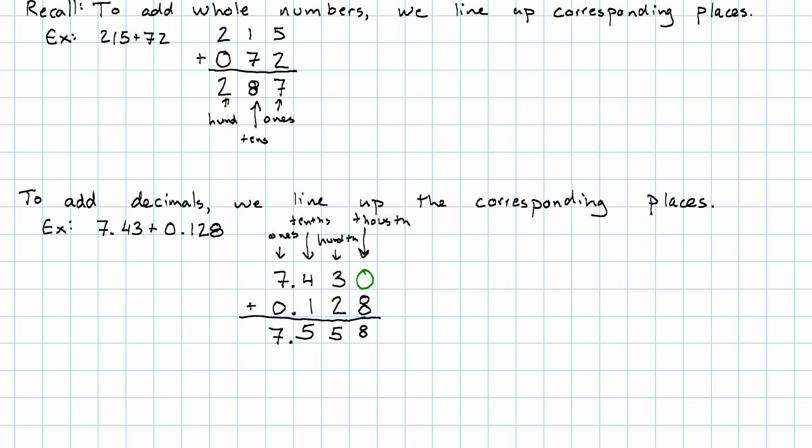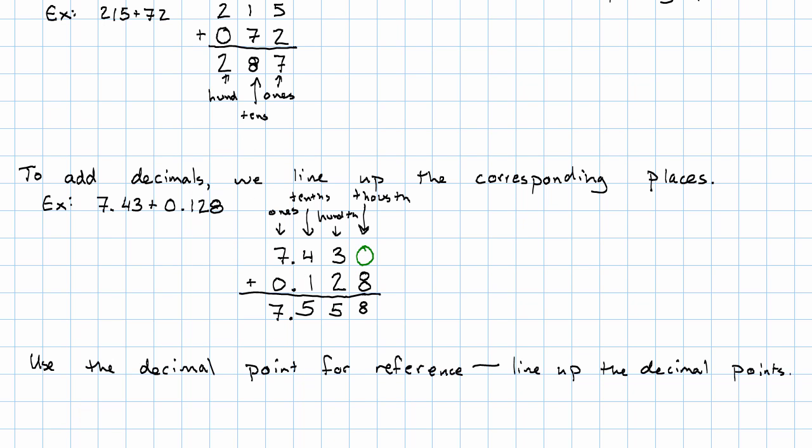And just as with the whole numbers, tens plus tens was tens, hundreds plus hundreds is hundreds. With the decimals, tenths plus tenths is tenths, hundredths plus hundredths is hundredths, and so on. We can use the decimal point as our point of reference. We can think of this as lining up the decimal points in an addition problem or a subtraction problem.